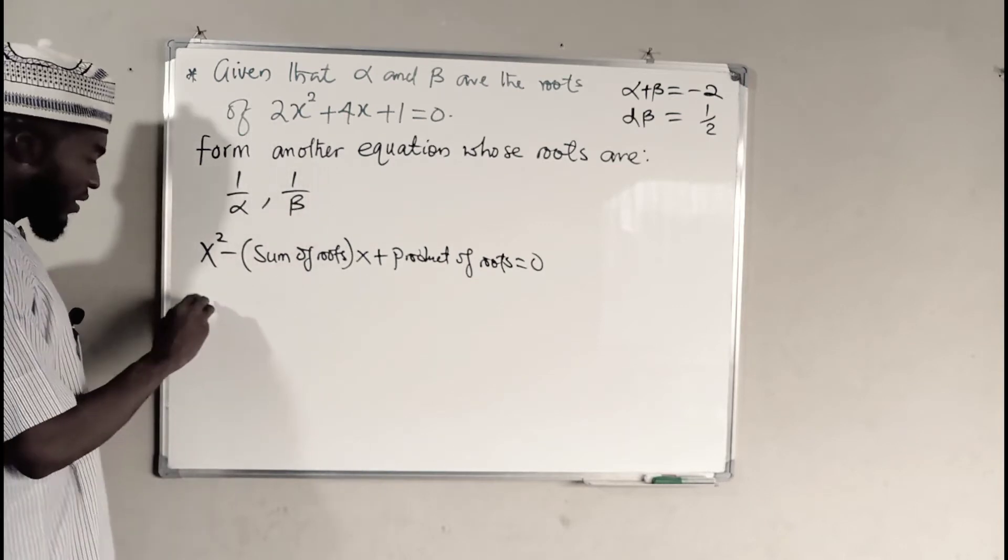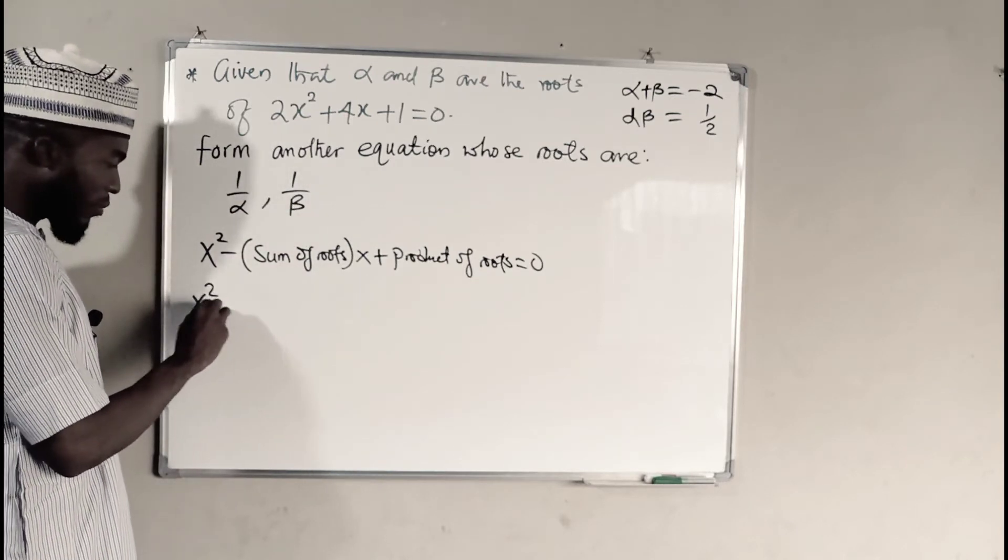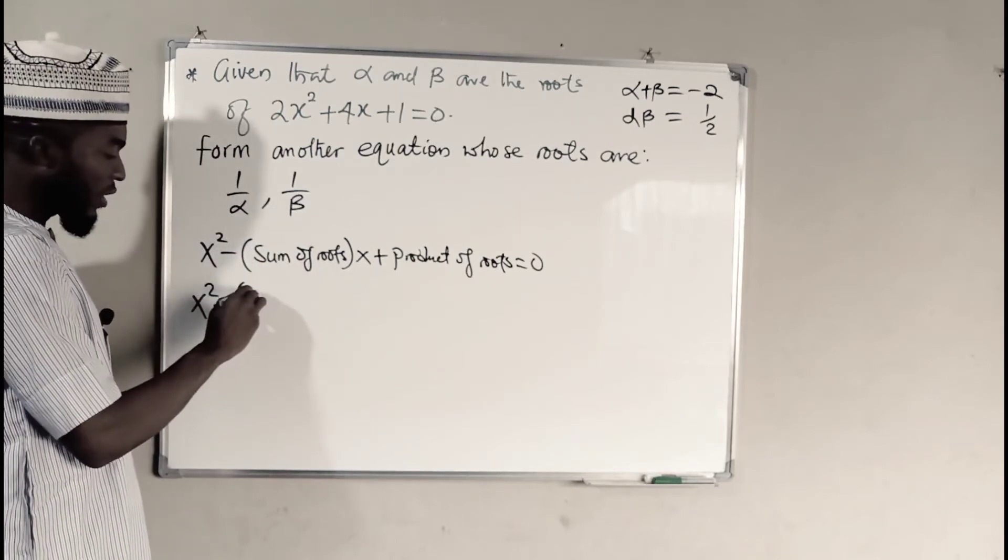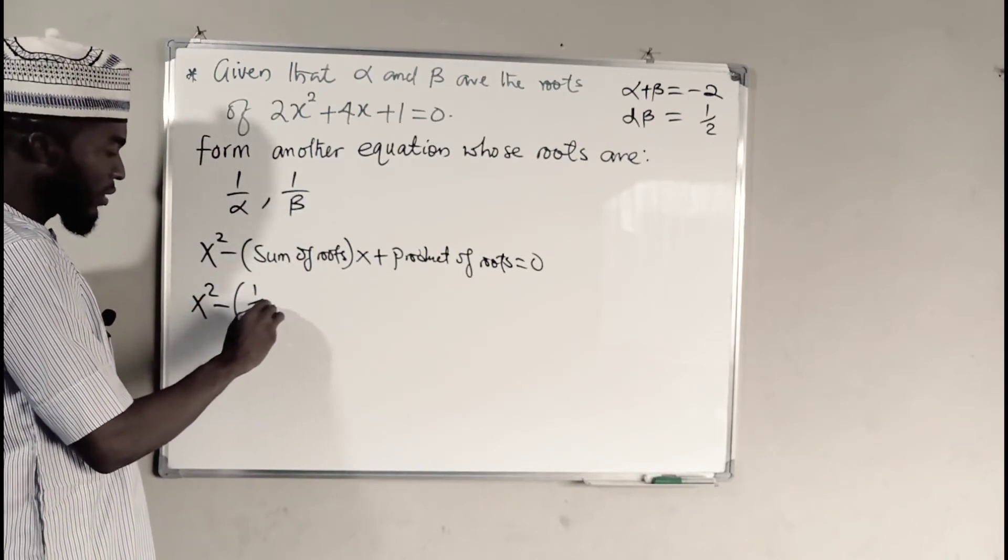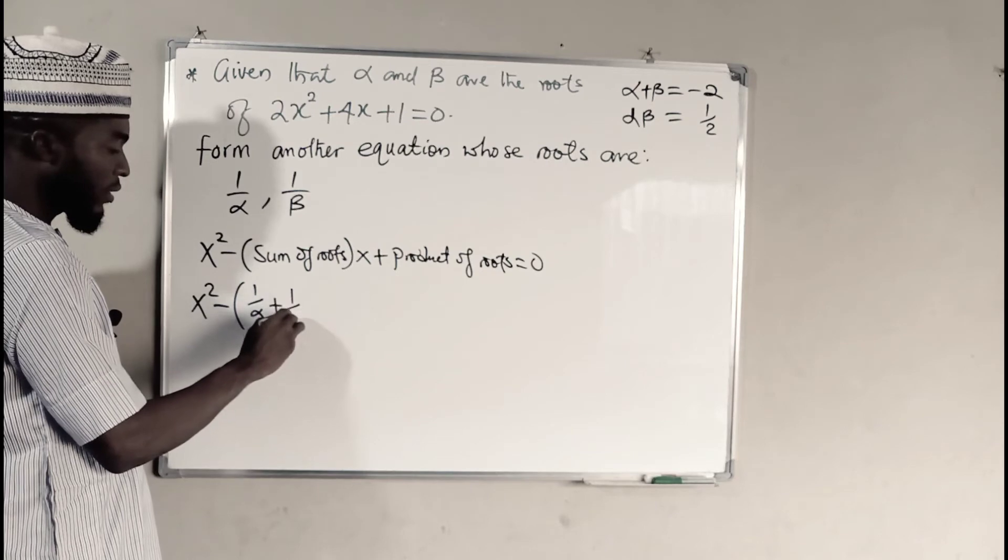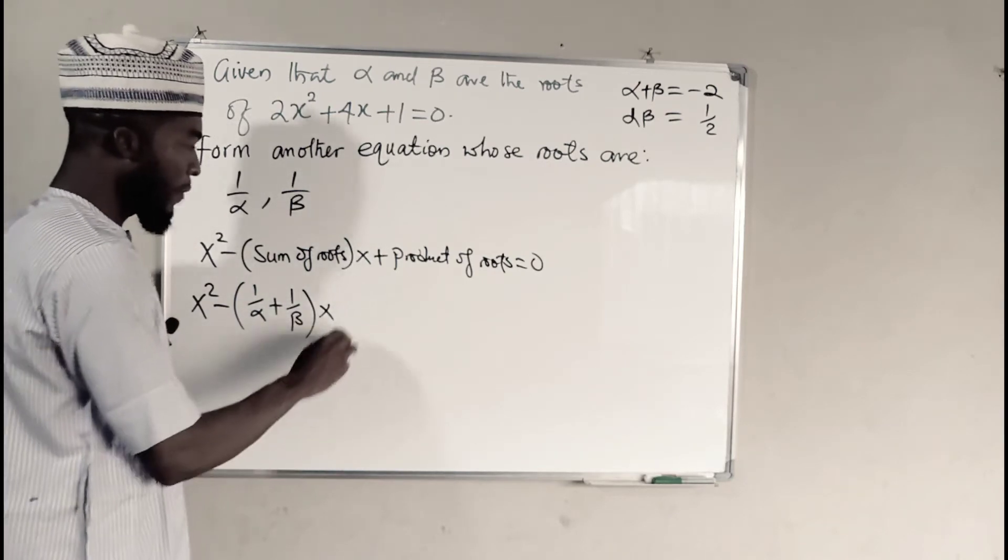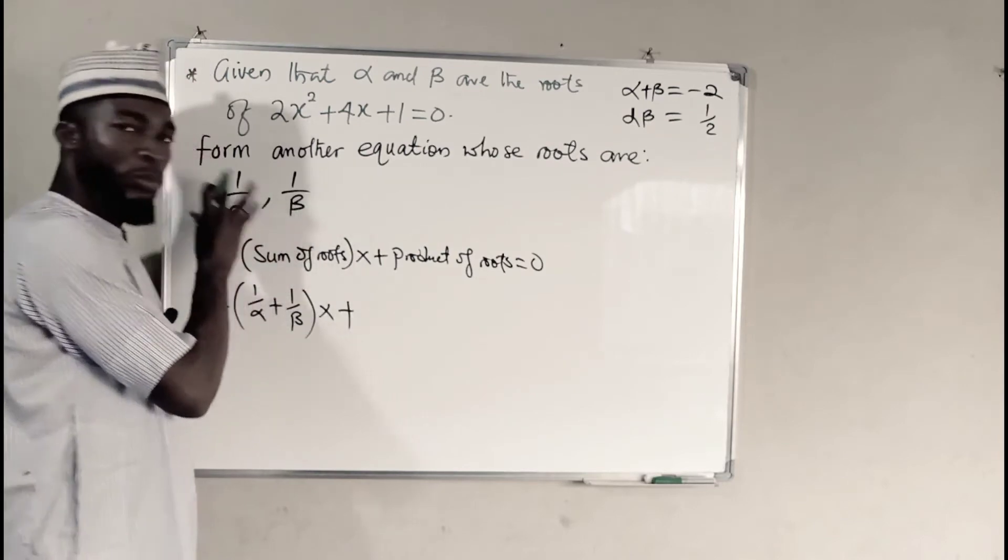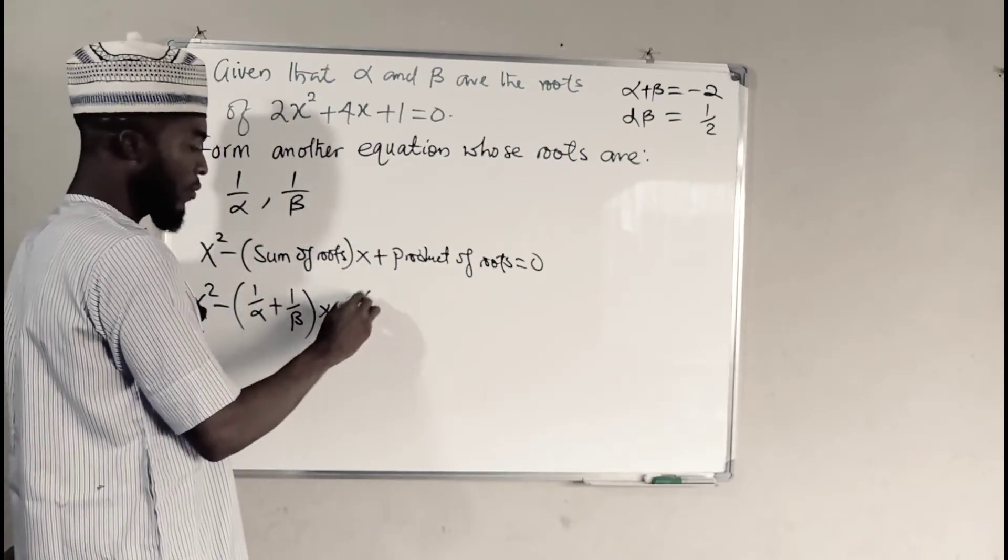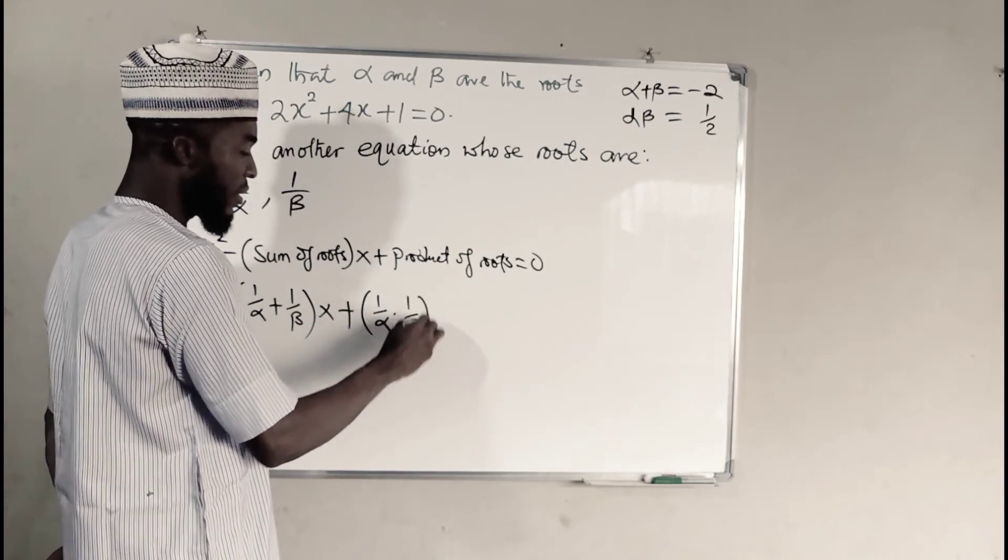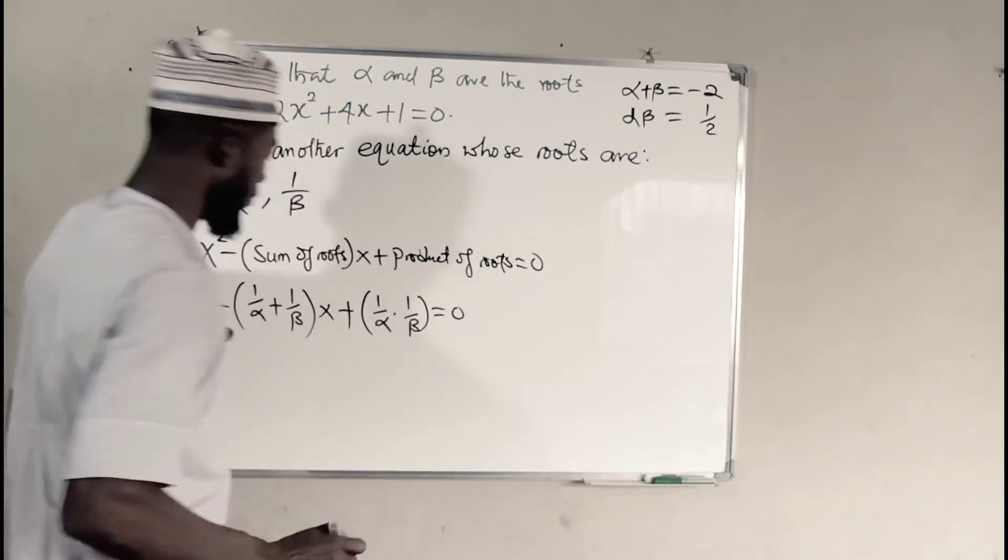So we can say x squared minus sum of roots, meaning we should add the two roots together. We have 1 over alpha plus 1 over beta times x, plus the product, meaning to multiply them together. We have 1 over alpha times 1 over beta, and the whole of this is equal to 0.